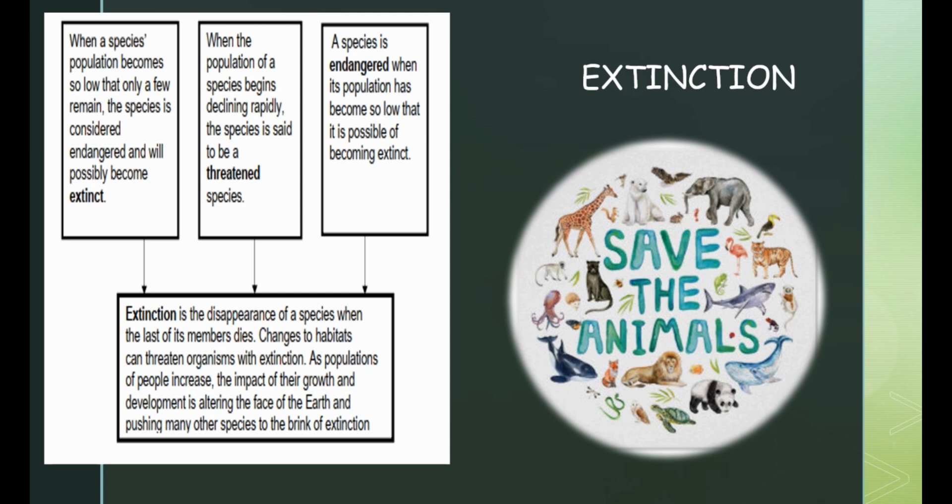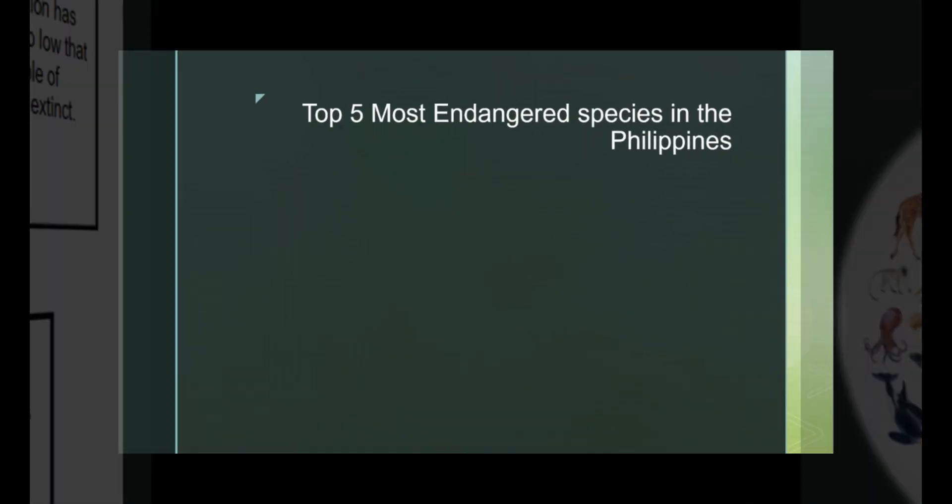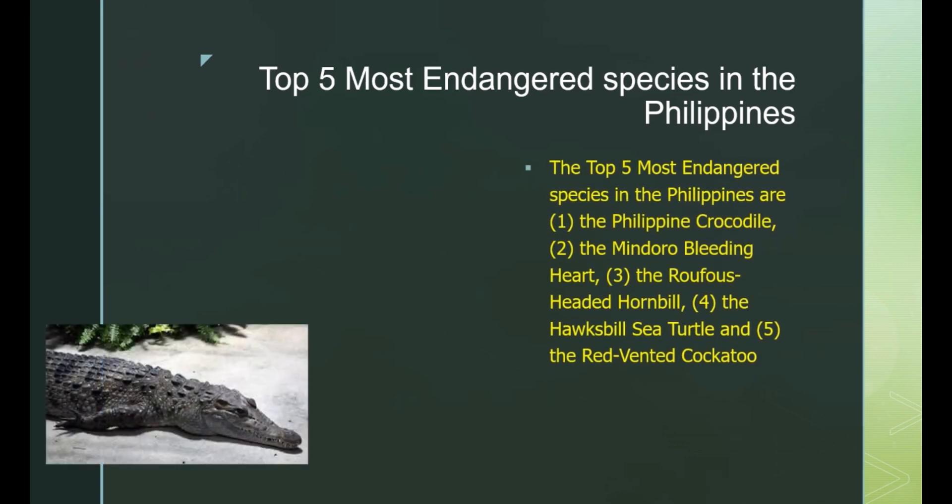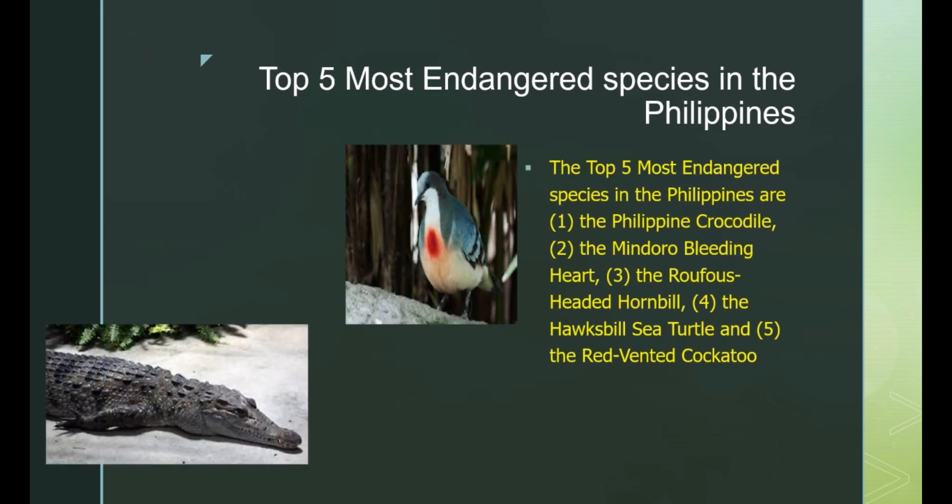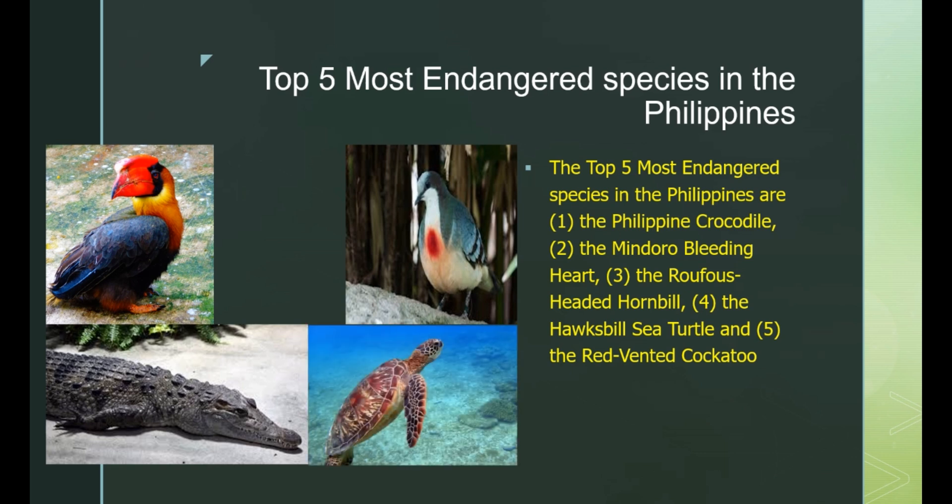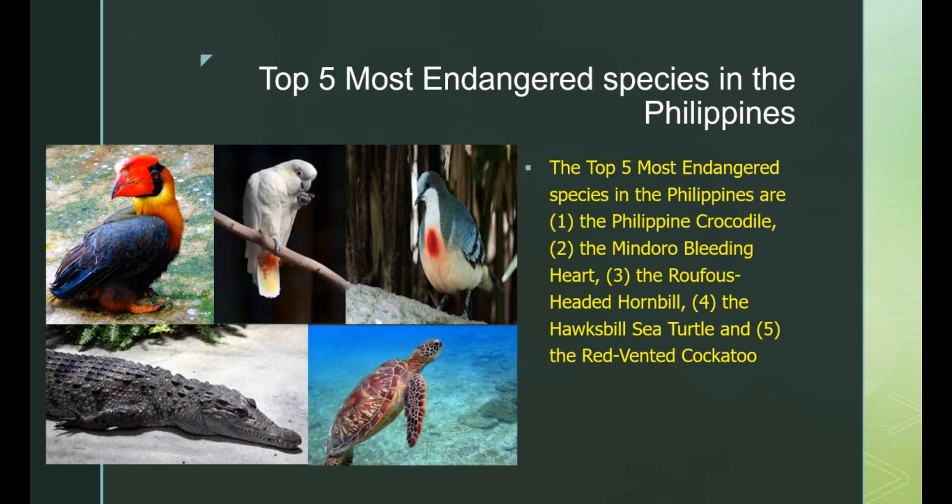When a species population becomes so low that only a few remain, the species is considered endangered and will possibly become extinct. When the population of a species begins declining rapidly, the species is said to be a threatened species. In the Philippines, these are the top five endangered species. The Philippine crocodile, the Mindoro bleeding heart, the rufous-headed hornbill, the hawksbill sea turtle, and the red-vented cockatoo.